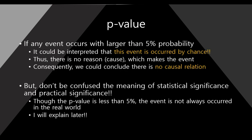In other words, if an event occurs with greater than 5% probability — like 10%, 6%, or 15% — it means it could be interpreted that this event occurred just by chance. So there is no reason which makes the event.